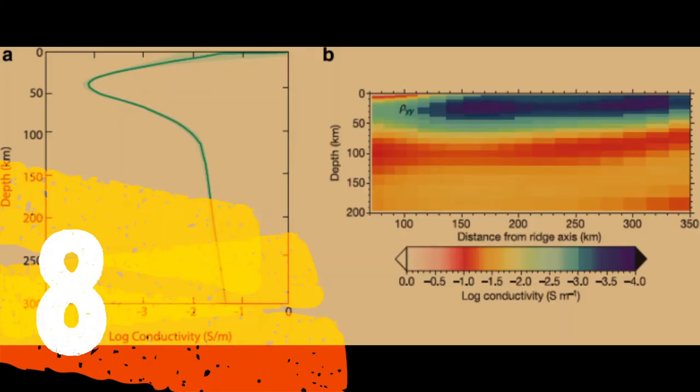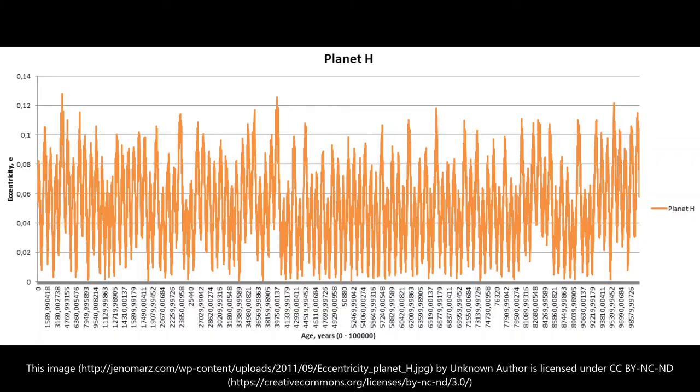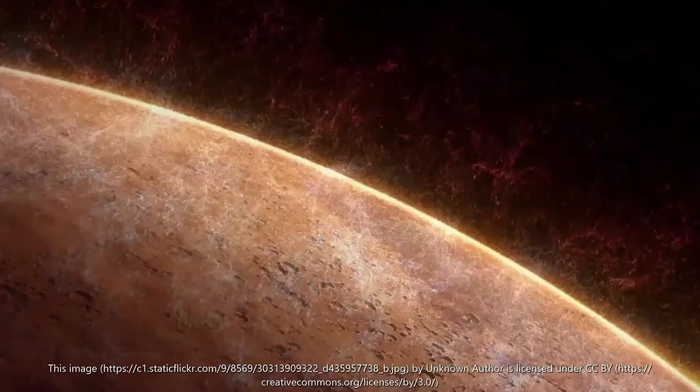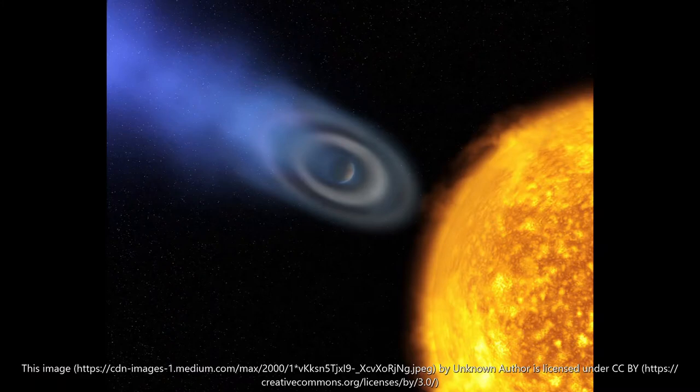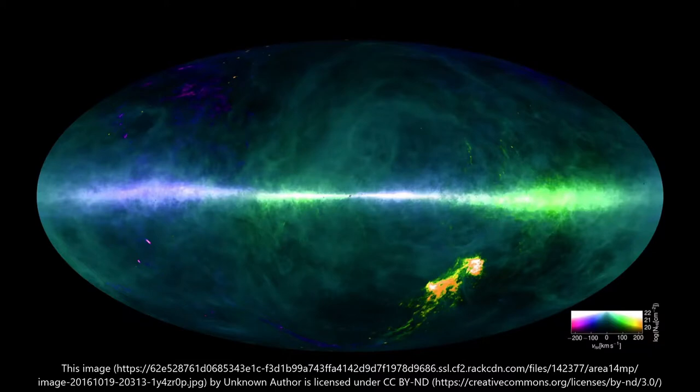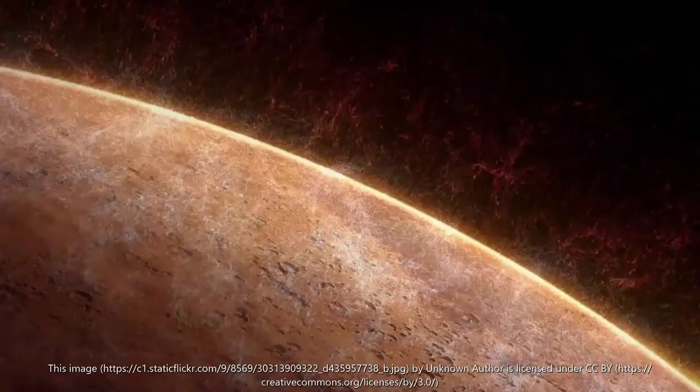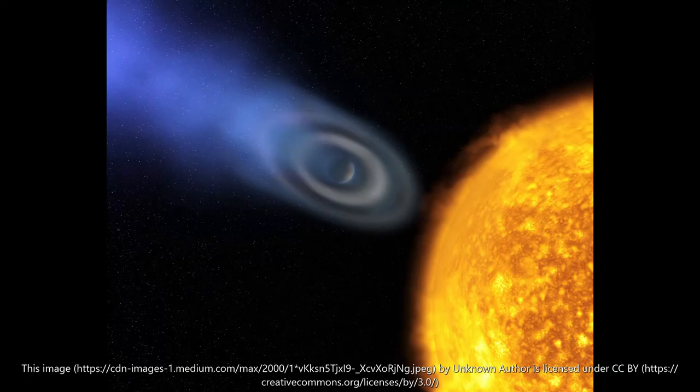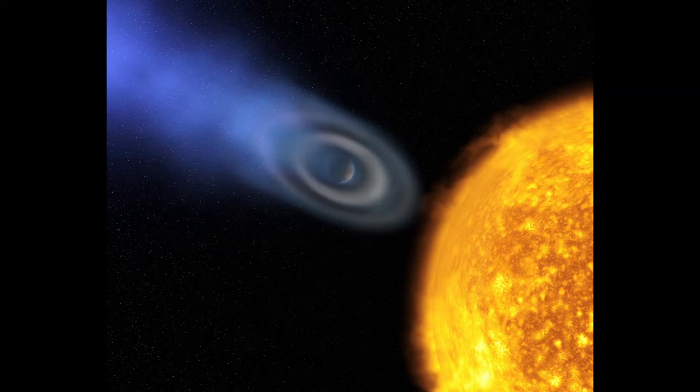Number 8: KELT-9b. The exoplanet called KELT-9b is the hottest planet we have ever found. The temperature of the star is around 9,700 degrees Celsius or 17,500 degrees Fahrenheit, which is almost 2 times the 5,480 degrees Celsius or 9,900 degrees Fahrenheit surface temperature of our sun. The daytime temperatures on the exoplanet reach 4,300 degrees Celsius or 8,900 degrees Fahrenheit, which is still insanely hot. Most stars in the universe do not even come close.